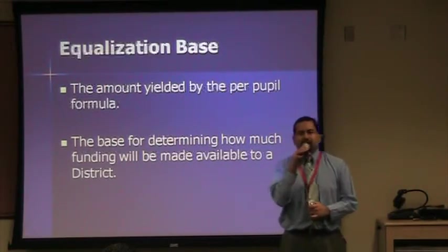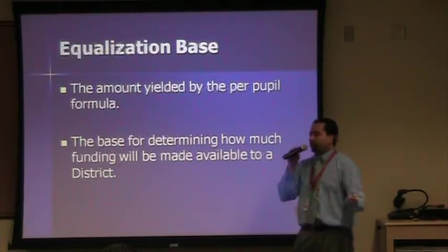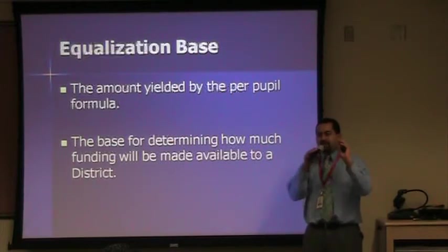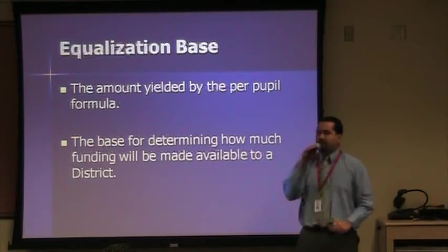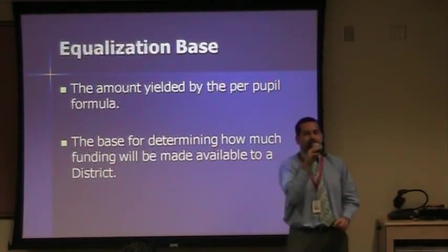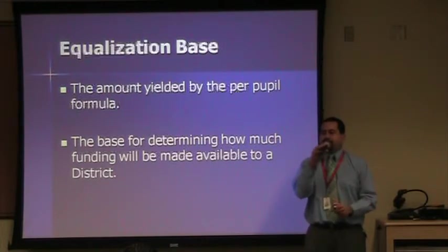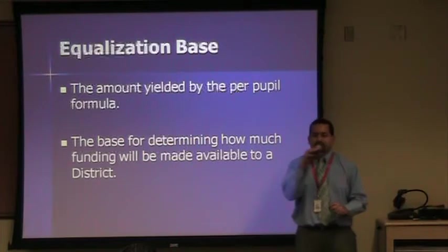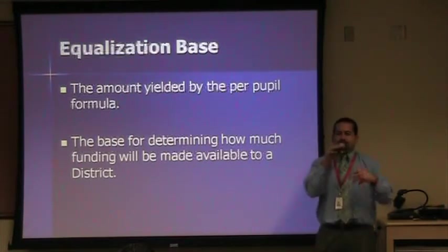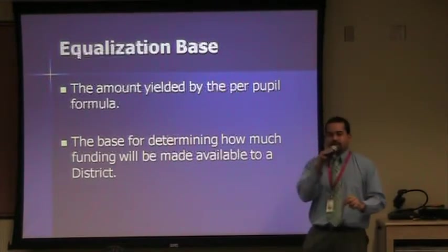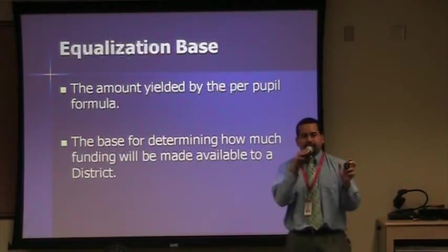The equalization base is basically the result of the per pupil formula — the amount it yields. It's the total amount the district has available to spend. We'll discuss where that money comes from: a portion comes from local property taxes and a portion from state aid. In more affluent districts like Cave Creek, they get all the money from local taxes. In a district like Roosevelt, they get the vast majority from state aid and very little from local taxes. The key thing to remember about equalization base is that it's the total — the result of the per pupil formula.